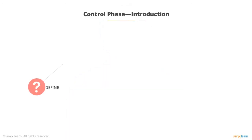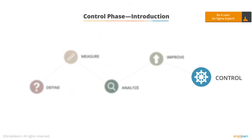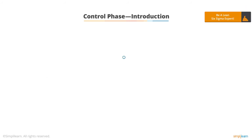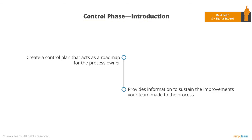Welcome to the Control phase, the last lesson of the course and the last phase of the DMAIC journey. The main objective of the Control phase is to create a control plan that acts as a roadmap for the process owner and provides information to sustain the improvements your team made to the process. The purpose of Control is to ensure the process gains implemented are maintained long after the project is over.